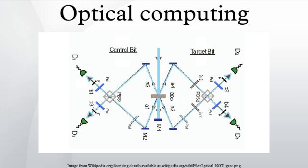Photonic logic is the use of photons in logic gates. Switching is obtained using non-linear optical effects when two or more signals are combined. Resonators are especially useful in photonic logic, since they allow a build-up of energy from constructive interference, thus enhancing optical non-linear effects. Other approaches currently being investigated include photonic logic at a molecular level, using photoluminescent chemicals.